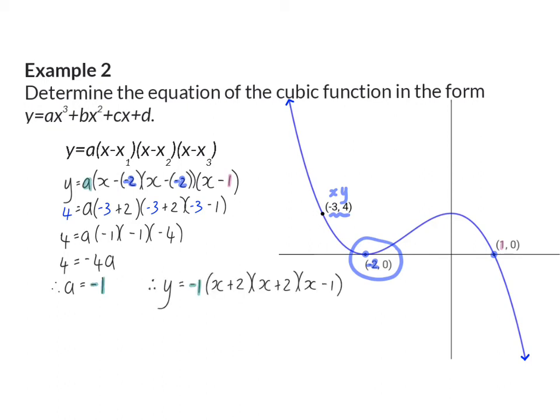This a value will then be substituted back in and the brackets multiplied out to determine our final equation which will then be y equals minus x cubed minus 3x squared plus 4.